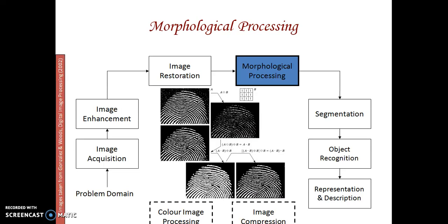Next is morphological processing. There are four major steps: morphological opening, morphological closing, morphological erosion, and morphological dilation. Erosion removes some pixels from an image to make it more useful. Dilation adds pixels to make the image more meaningful. Opening applies erosion followed by dilation; dilation followed by erosion is called closing.